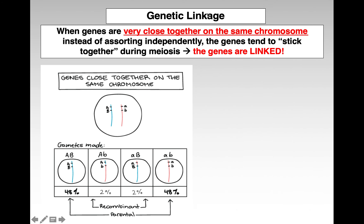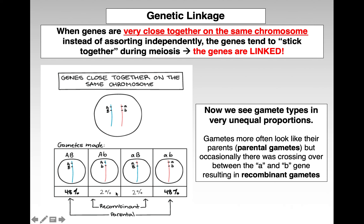If you have genetic linkage, that means genes are very close together on the same chromosome, and the genes tend to stick together during meiosis. So instead of having a 25-25-25-25 ratio, you get things that look like the parental chromosomes. The recombinant, which results from crossing over, occurs at a very low rate. We can use this to our advantage to do gene mapping.